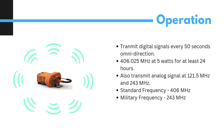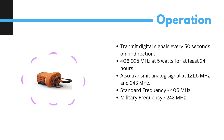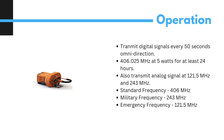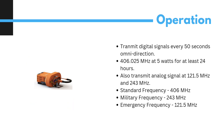Therefore, 406 MHz is now being used for satellite detection and location of distressed watercraft, aircraft and people, while the 121.5 MHz frequency is still an emergency frequency and is monitored by overlying aircraft and control towers.